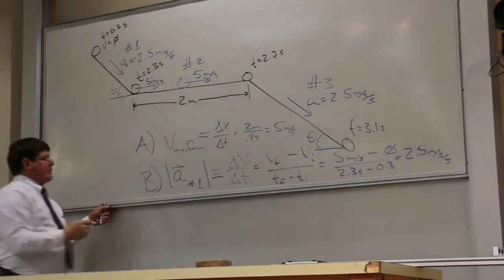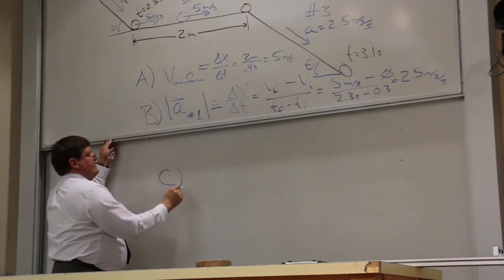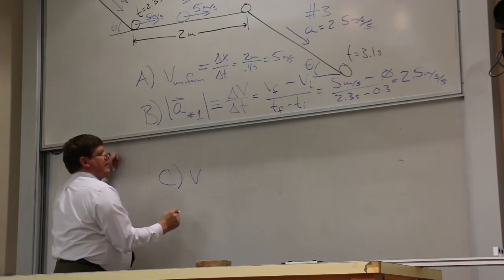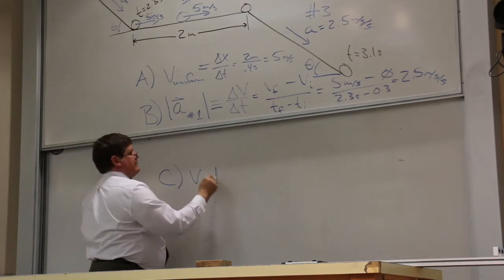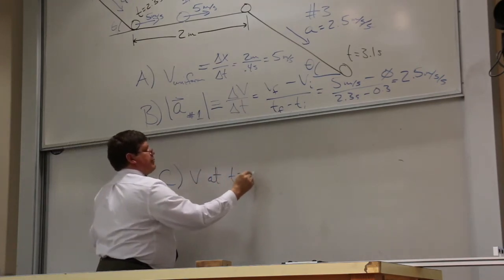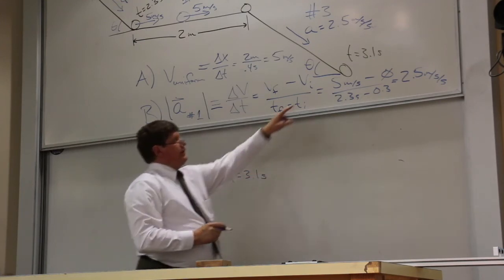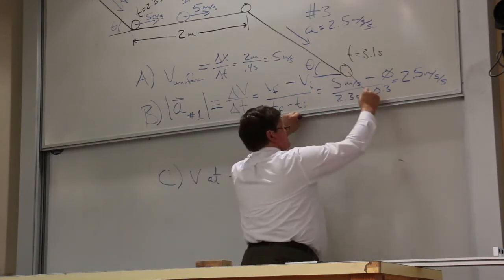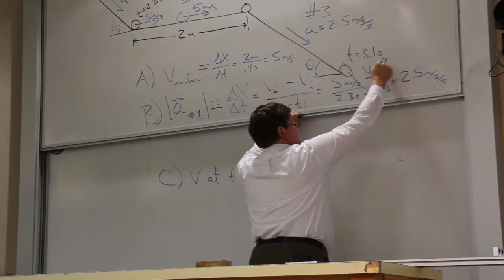The last part of this problem, part C, is find the velocity at T equals 3.1 seconds. In other words, what's the velocity right there?